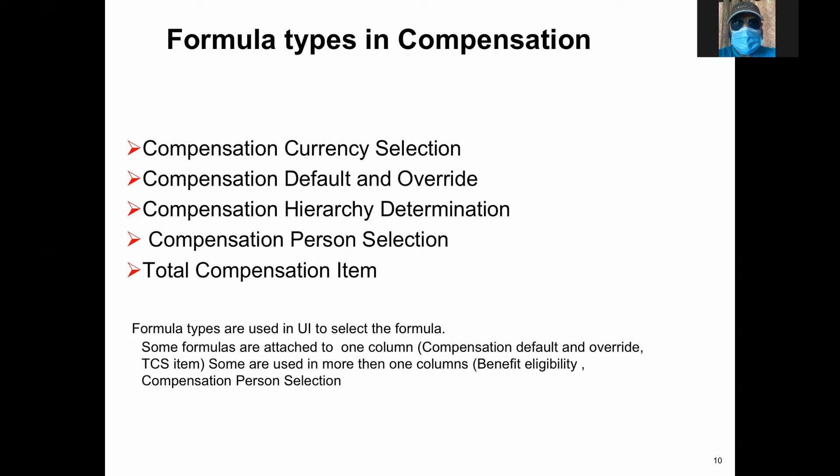The other one is total compensation item, which is basically the value for the compensation items. That is a sample of formula types — there are too many formula types and we'll look at each one in detail later.